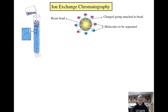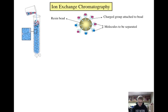Whereas thin layer chromatography takes advantage of amino acid polarity, ion exchange chromatography takes advantage of amino acid charge. The basis of ion exchange chromatography is that you have a column, as is shown on the left, filled with resin beads that are either negatively charged or positively charged. Amino acids will stick to the column for varying amounts of time depending on their charges. On the right, you can see an example of what the resin beads look like. Charged groups attached to the beads hold onto the amino acids to be separated.